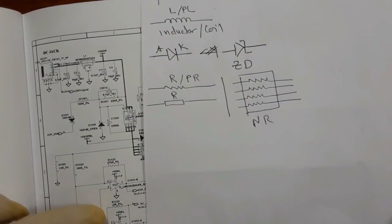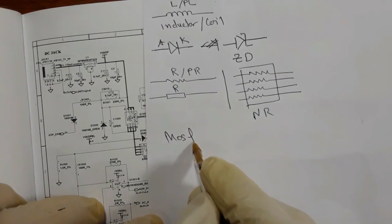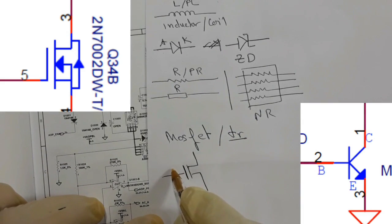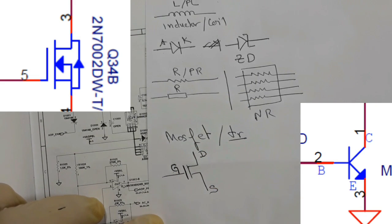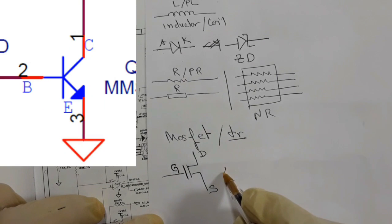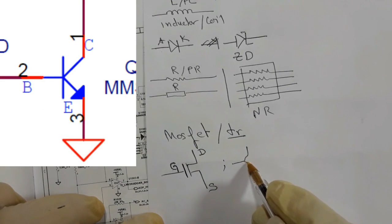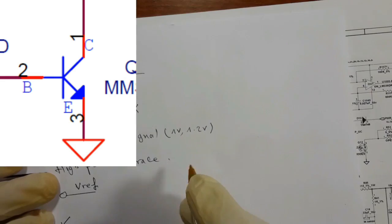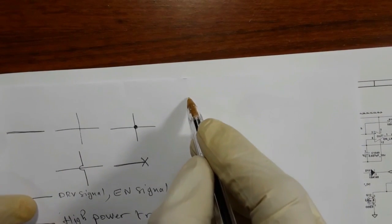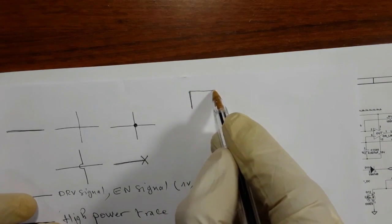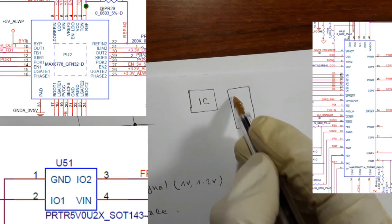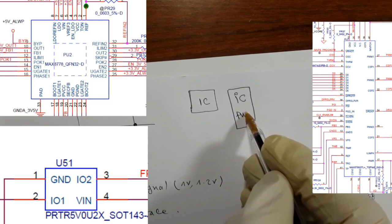We can also find in the motherboard the MOSFET, or we can find a transistor. The symbol for the MOSFET has a gate here, a drain here, and a source here. Or you can find the transistor, with a collector, emitter, and base. What about ICs? For an IC in the motherboard, it is indicated with a square or rectangle like this.